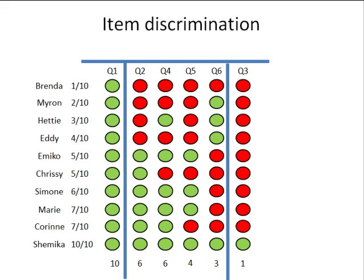Discrimination looks at a different feature of the questions — in a sense, how characteristic the responses are relative to the difficulty of the question. Looking at question 2, it was answered incorrectly by those 4 students who did worse on the test and correctly by those who did well. We say the discrimination of question 2 is high — it's very good at discriminating between people who did badly and people who did well. The actual measure of discrimination for this question is 0.81. Discrimination always lies between minus 1 and positive 1, and 0.81, being close to positive 1, indicates high discrimination.